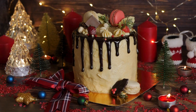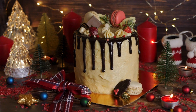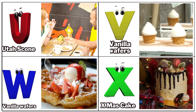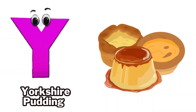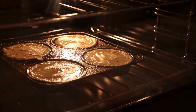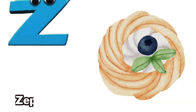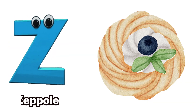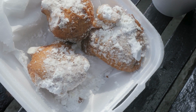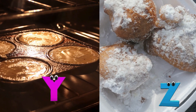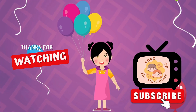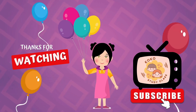X is for Xmas cake. Y is for Yorkshire pudding. Z is for zeppole.